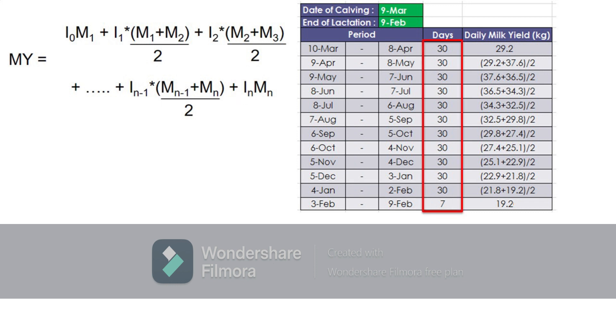The sum of the intervals is equal to 337 days, which represents the length of the lactation period.